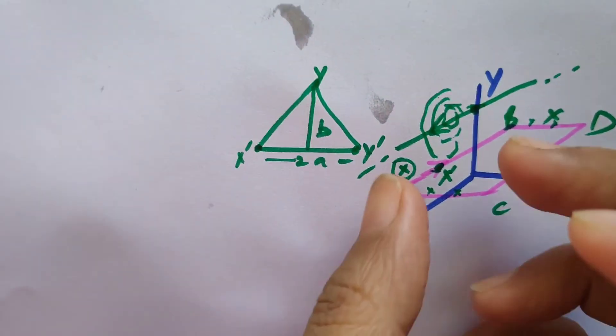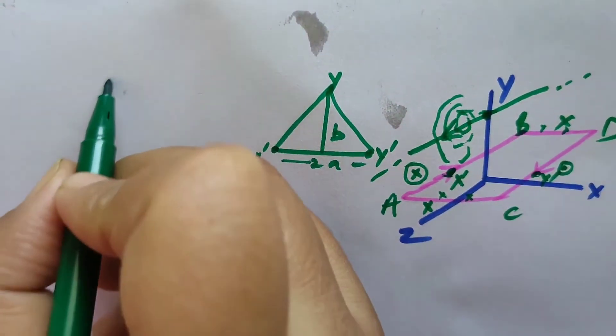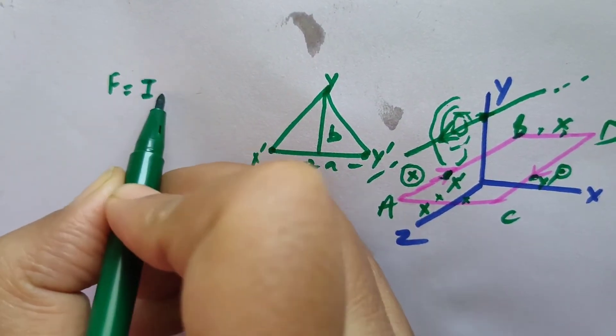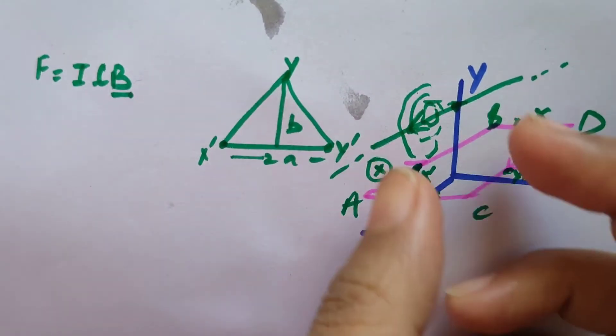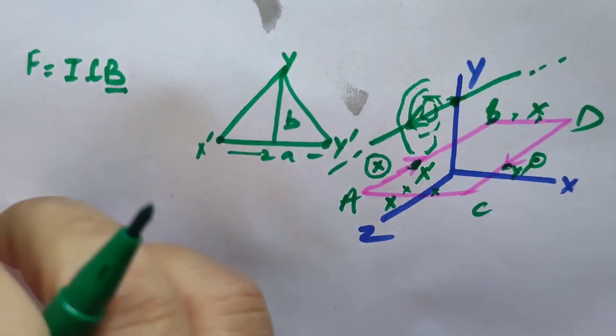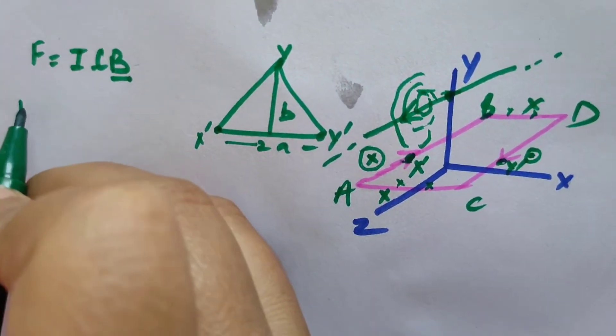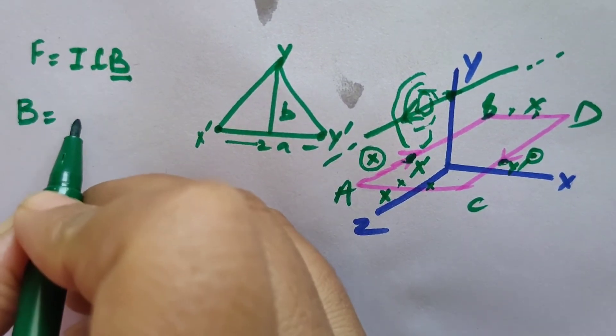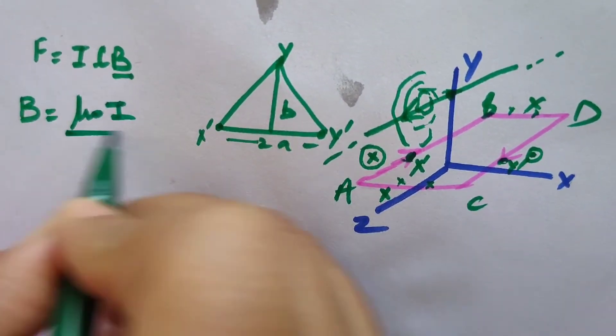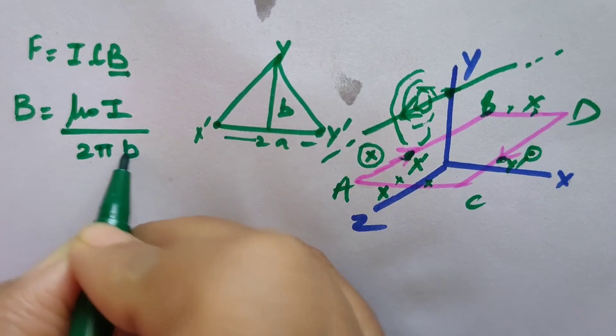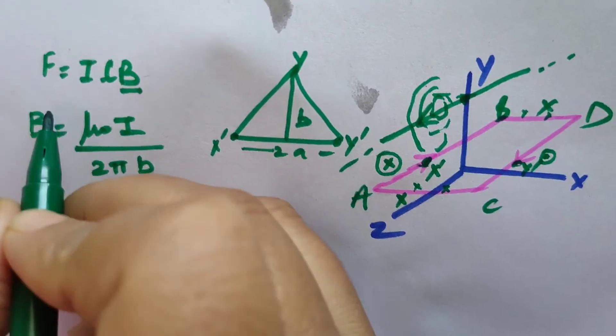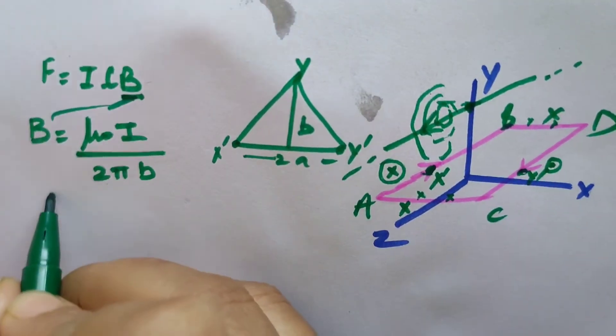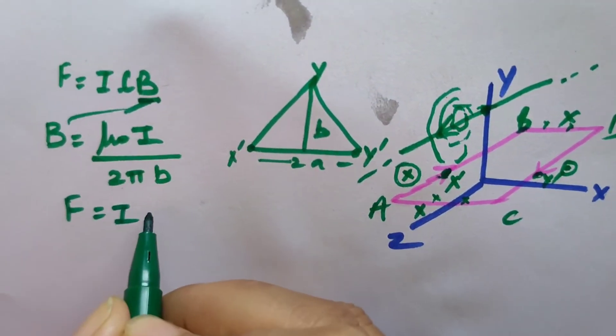What could be the force at this point x'? If you want to find out F, then the formula is F = ILB. But what is B here? B is the magnetic field due to this wire. As we know, for an infinitely long wire, magnetic field is B = μ₀I/(2πb).